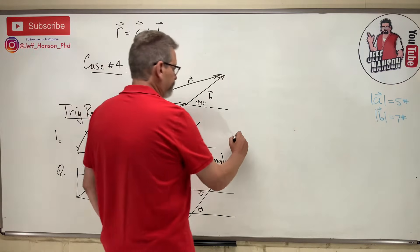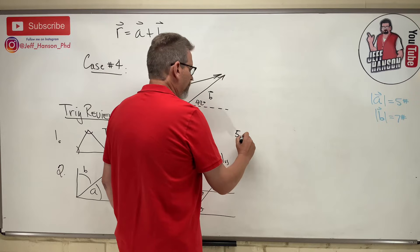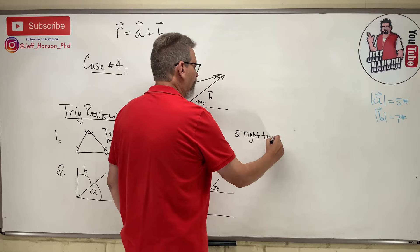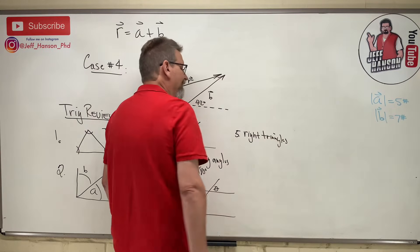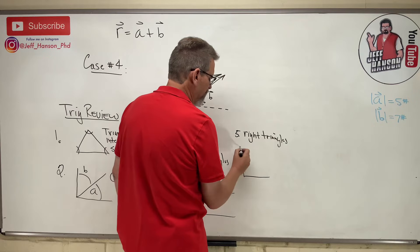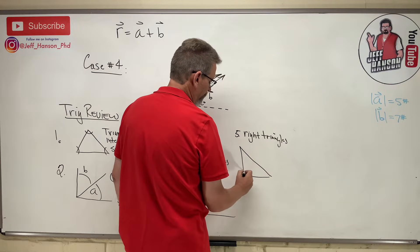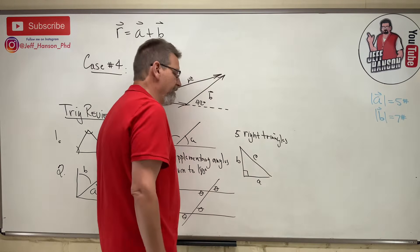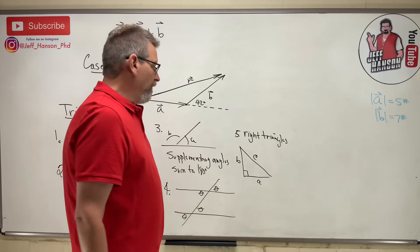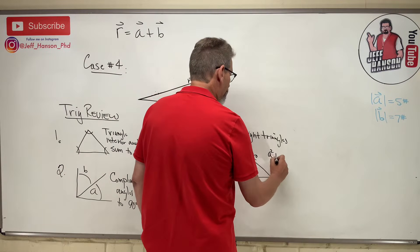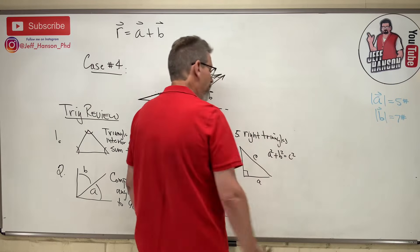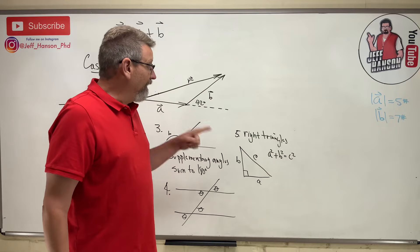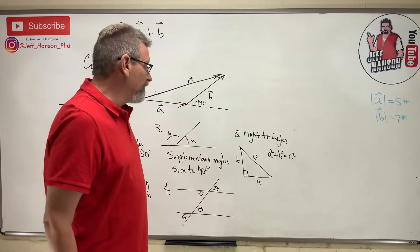Number five: right triangles — and there's no such thing as wrong triangles. Label the sides A, B, and C. We remember the Pythagorean theorem: A squared plus B squared equals C squared. That's pretty handy.